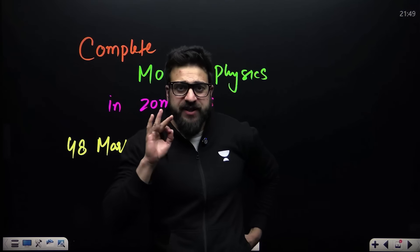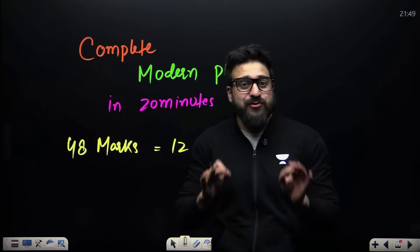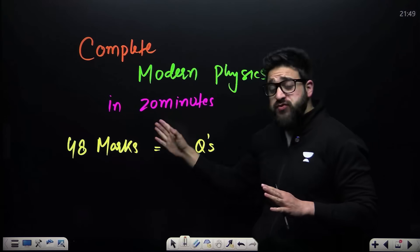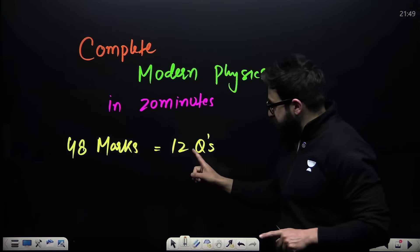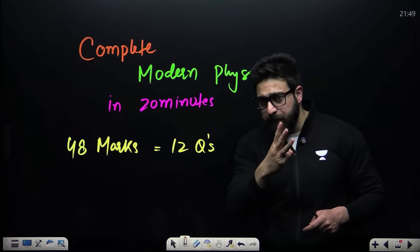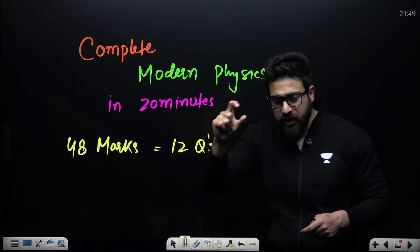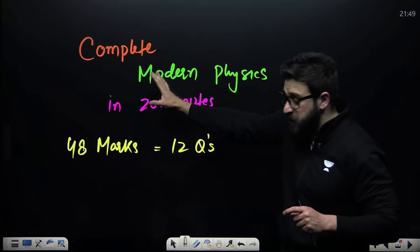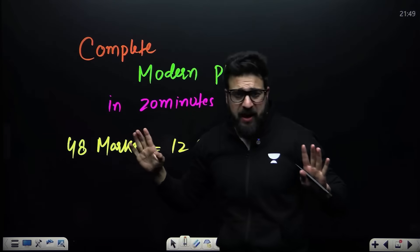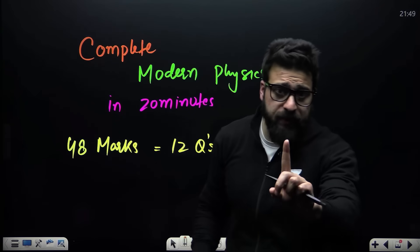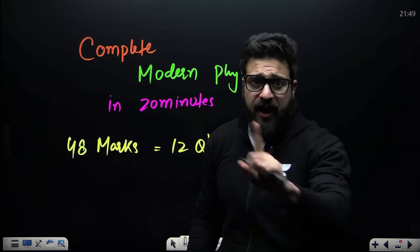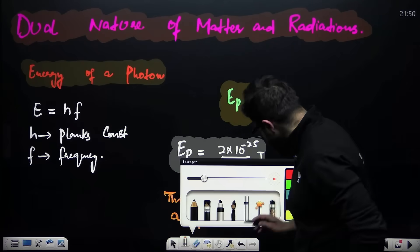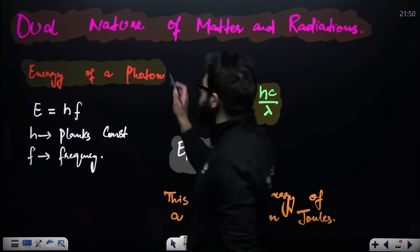Alright, in the next 20 minutes we'll be completing the entire modern physics for NEET 2025. We'll be covering three chapters: dual nature, atoms, and nuclei. Around 9 to 12 questions are expected from this portion, that means 48 marks. Extremely important session — make sure you smash the like button and share it with your friends.